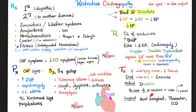Beta-blockers can also lead to bradycardia — they slow the heart, which lowers cardiac output even more. Calcium channel blockers should also be avoided because they lower the heart rate and reduce cardiac output, and they raise the preload similarly to beta-blockers. When everything fails, consider heart transplant, pacemaker, or implantable cardioverter-defibrillator.